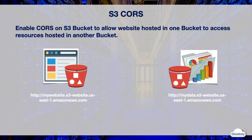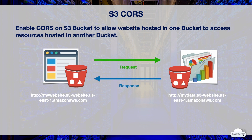You can enable CORS in S3 to allow resources stored in one bucket to be accessed from a different origin. For instance, you can enable your website hosted in one S3 bucket to access resources in another bucket. Suppose you have an S3 bucket called MyBucket hosting a static website, where you want to request data stored in another bucket called MyData. You need to enable CORS on the MyData bucket to allow requests from the MyWebsite bucket. With CORS support, you can build rich client-side web applications and selectively allow cross-origin access.